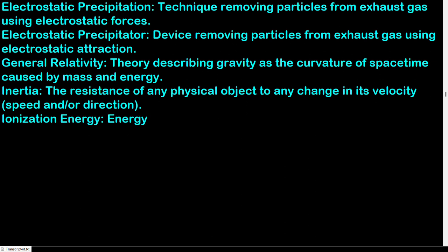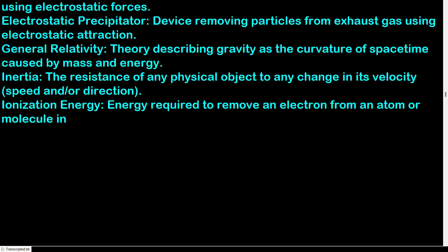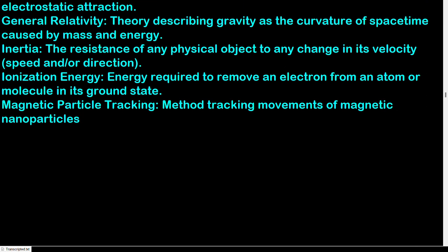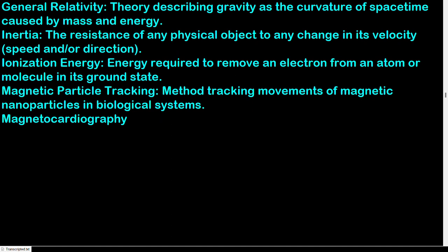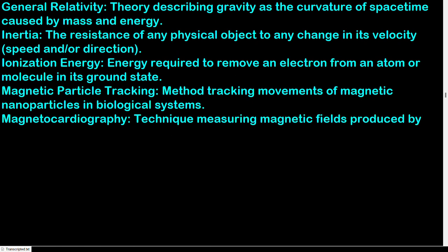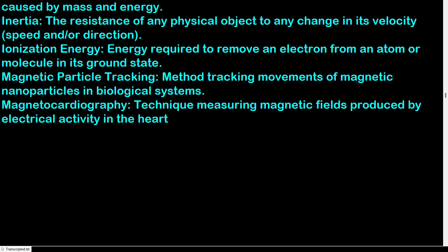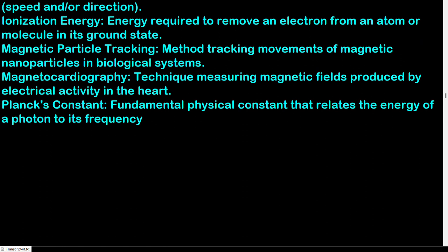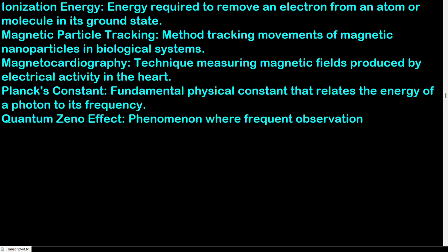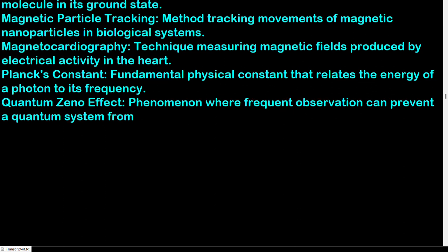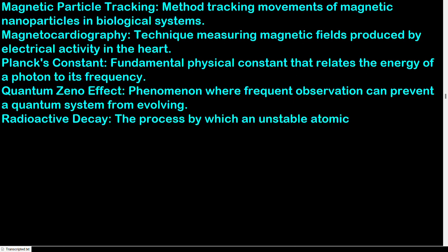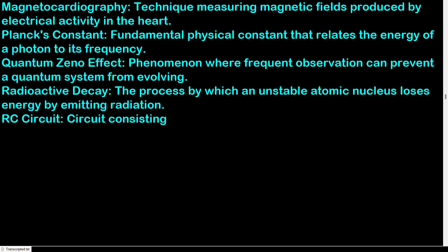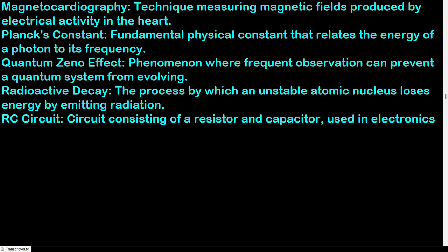Ionization energy: energy required to remove an electron from an atom or molecule in its ground state. Magnetic particle tracking: method tracking movements of magnetic nanoparticles in biological systems. Magnetic cardiography: technique measuring magnetic fields produced by electrical activity in the heart. Planck's constant: fundamental physical constant that relates the energy of a photon to its frequency. Quantum Zeno effect: phenomenon where frequent observation can prevent a quantum system from evolving. Radioactive decay: the process by which an unstable atomic nucleus loses energy by emitting radiation. RC circuit: circuit consisting of a resistor and capacitor, used in electronics and signal processing.